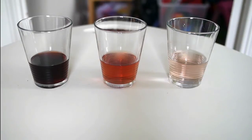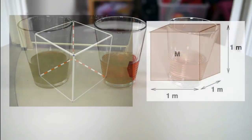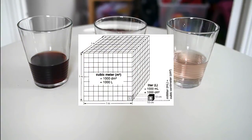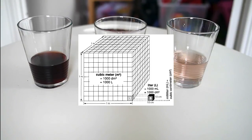So what is a decimeter? Well, if you imagine one meter by one meter by one meter — a one meter cube — that is one meter cubed. Now imagine that meter cubed was broken down into 1000 smaller cubes. These smaller cubes each have the dimension of 10 centimetres by 10 centimetres by 10 centimetres. So a decimeter is a tenth of a meter — it's 10 centimetres.